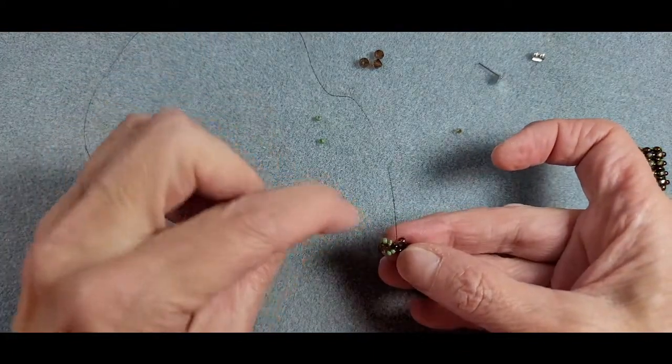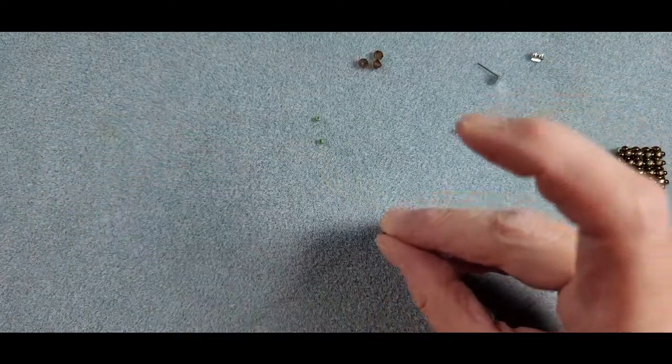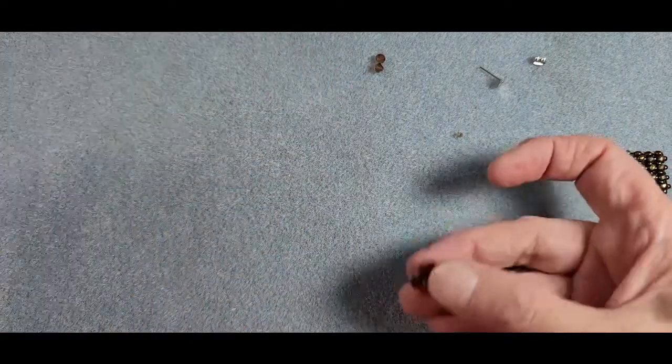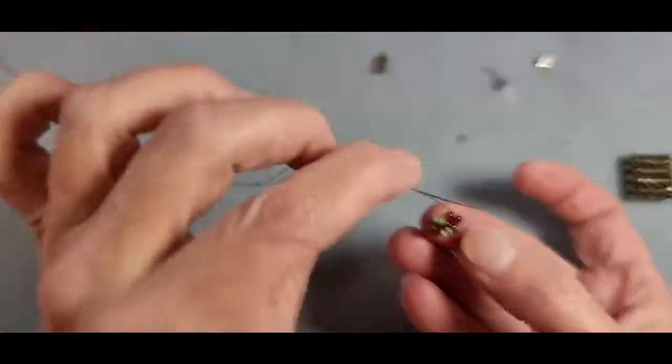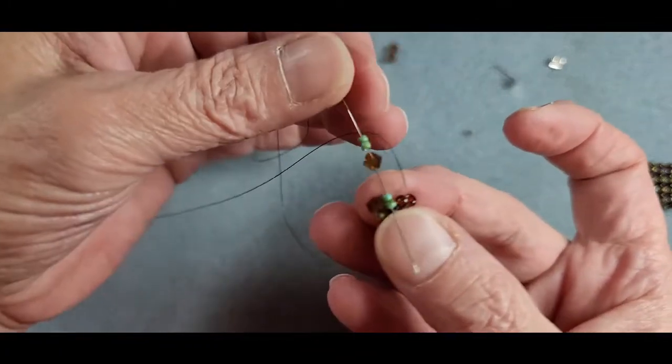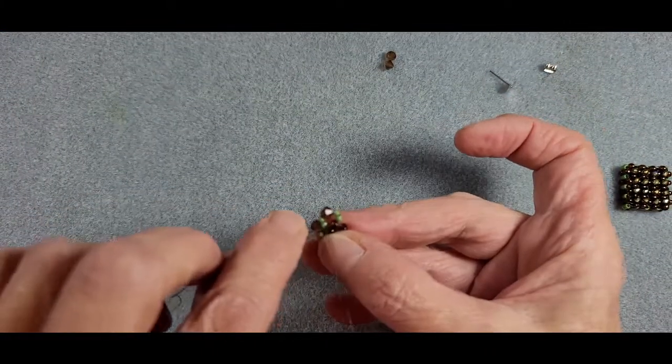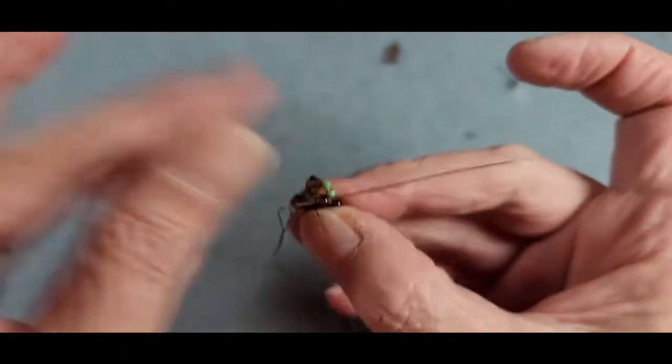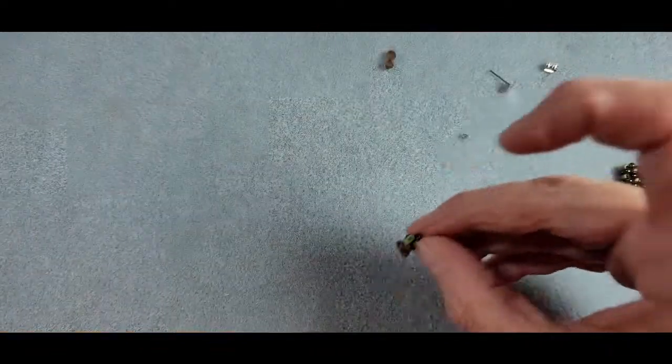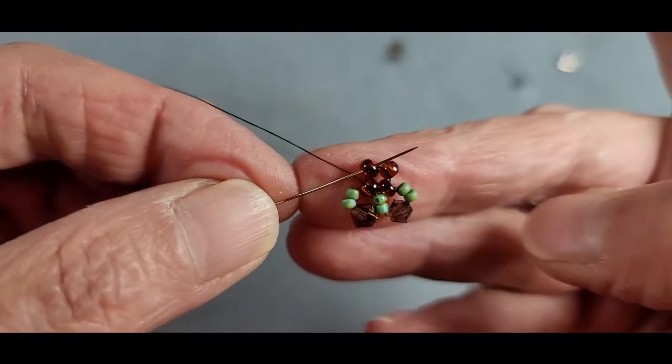We're going to move into the next 8-0 on the base. We're going to pick up two 11-0s and a bicone. We are exiting from this 8-0. We're going to come down through the two 11-0s on the left side of our 8-0 bead and come back through that same 8-0. So now we have two of our little walls of our cube in place and we need to move into the next 8-0 on the base.